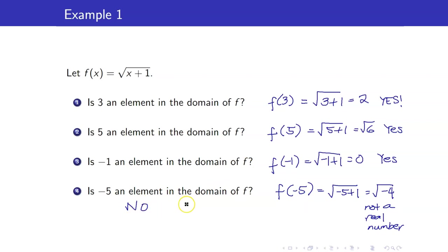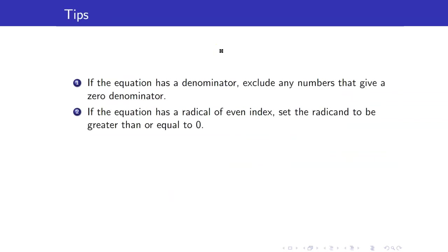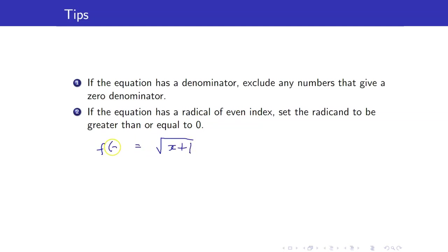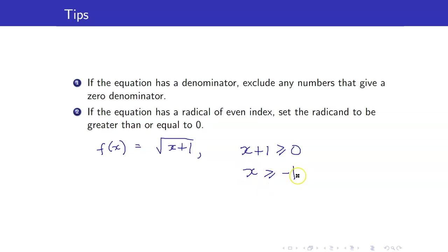Negative 5 is not an element in the domain of f. Here are some tips in looking for the domain of a function defined by an equation. First, if the equation has a denominator, we will exclude any numbers that give a 0 denominator, because that would mean the image will not exist. Moreover, if the equation has a radical of even index, we have to set the radicand — the expression inside the radical sign — to be greater than or equal to 0. For f of x equals square root of x plus 1, we set x plus 1 greater than or equal to 0, so x is greater than or equal to negative 1.